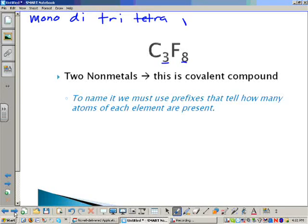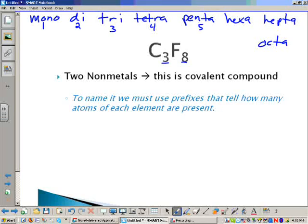hexa, hepta, and our final one is octa. There's also nona and deca. But mono represents one, di is two, tri is three, tetra is four, penta is five, hexa is six, hepta is seven, octa is eight. Now, if you notice in our situation, we need a tri and we need an octa.